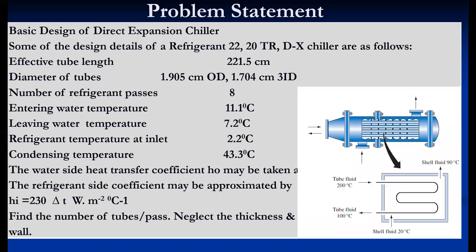This is a DX type shell evaporator where refrigerant flows through the tubes. There are 8 number of passes in one shell. For example, pass one, pass two, pass three, pass four — like that, eight passes total. The refrigerant inlet temperature is 2°C, and refrigerant outlet temperature is also 2°C because we assume pure saturated state. Shell inlet water temperature is 11.1°C and shell outlet water temperature is 7.2°C.